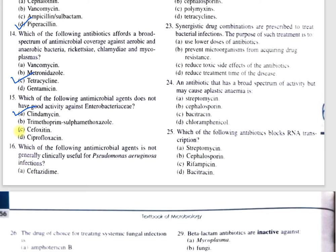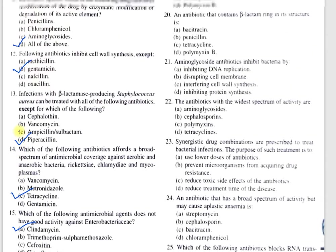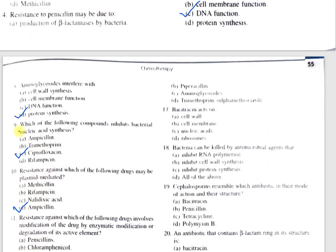Question number 16: Which of the following antimicrobial agents is not generally clinically useful for Pseudomonas aeruginosa infections? A, ceftazidime; B, piperacillin; C, aminoglycosides; D, trimethoprim-sulfamethoxazole. The correct option is D, trimethoprim-sulfamethoxazole, because P. aeruginosa possesses two multiple drug efflux systems in its outer membrane — the outer membrane proteins OprM and OprG — because of which this antibiotic is effluxed out and cannot reach its target site.